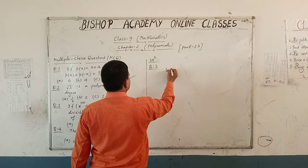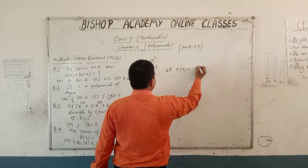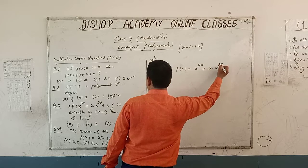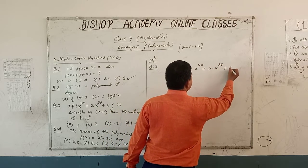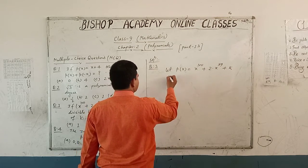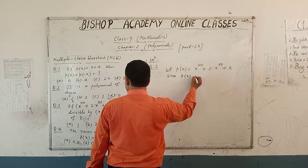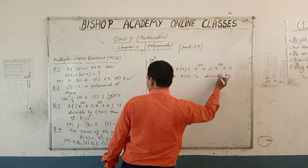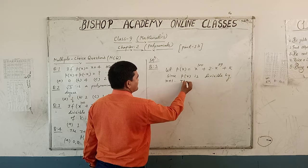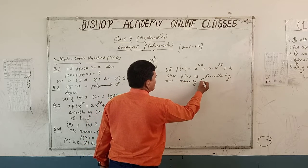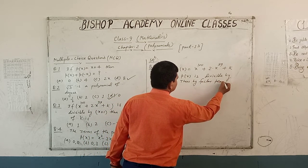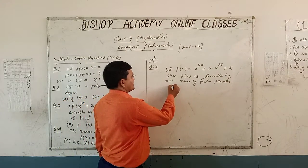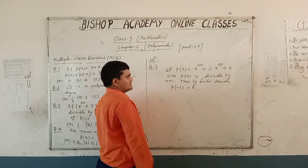Let P(x) is equal to x raised to the power 100 plus 2 into x raised to the power 99 plus k. Since P(x) is divisible by x plus 1, then by the factor theorem.